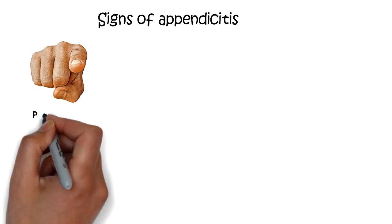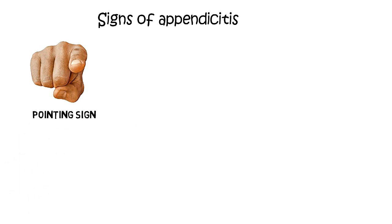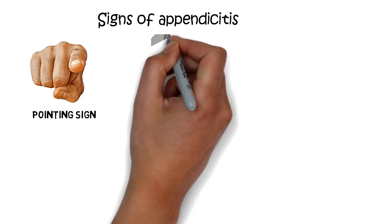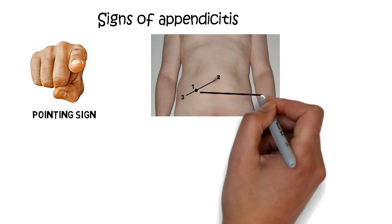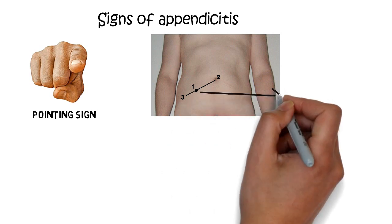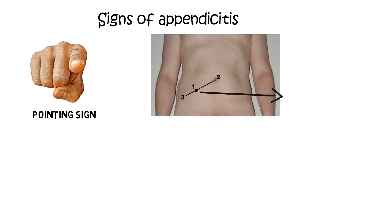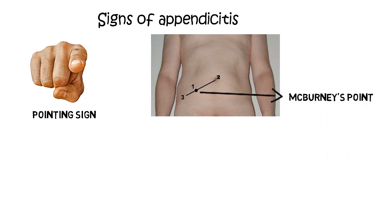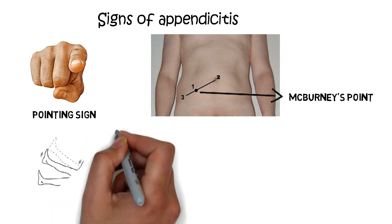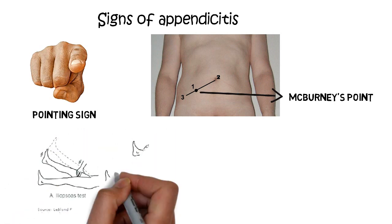The clinical signs of appendicitis include: first, the pointing sign, where the patient points to where the pain began and where it moved. There is also tenderness at McBurney's point — one-third of the distance from the anterior superior iliac spine to the umbilicus — known as McBurney's sign. Rebound tenderness at McBurney's point is known as Blumberg's sign.